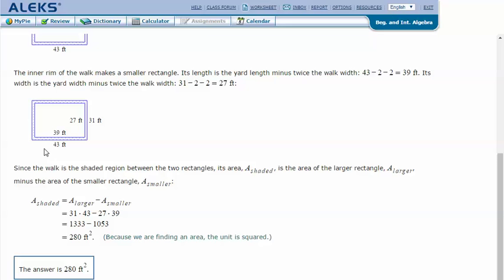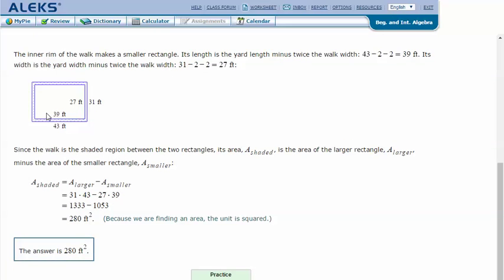To find the area of the path or this shaded area, we have to take the area of the larger rectangle on the outside minus the area of the smaller rectangle on the inside. So 31 times 43 minus 27 times 39.